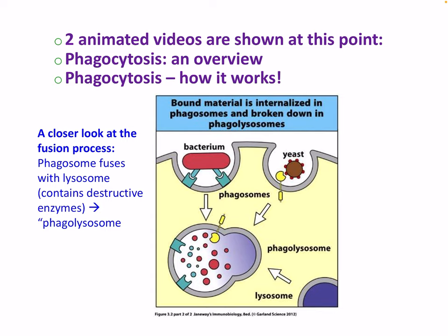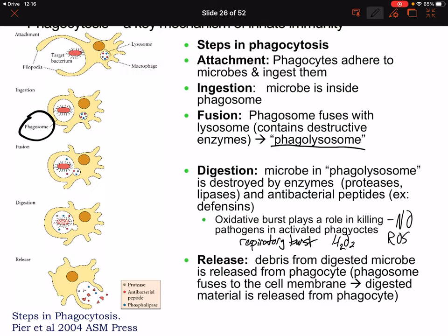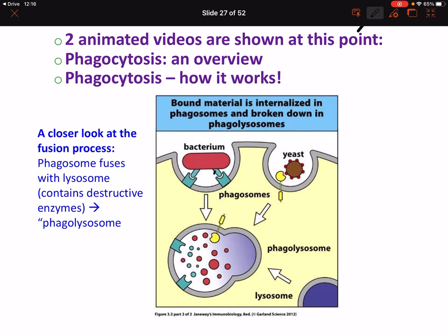There are two animated videos to illustrate this process, but here's a quick figure summarizing it: we go from the bacterium, to the phagosome, to the phagolysosome, where it's degraded and the contents are released. That's a quick summary.